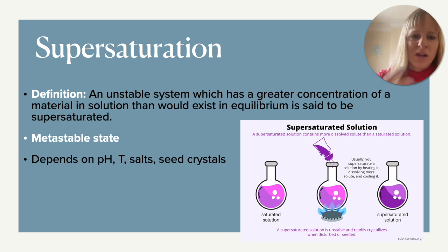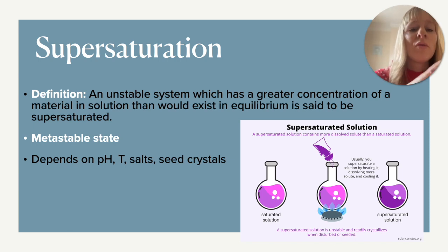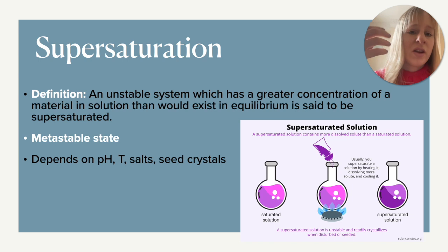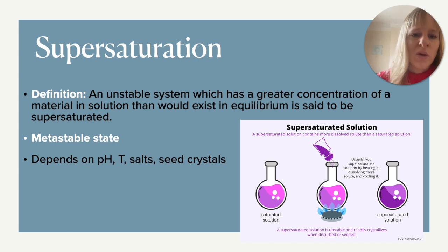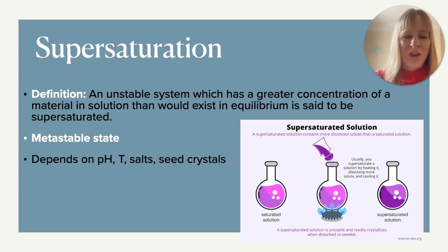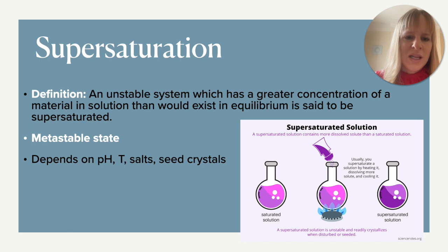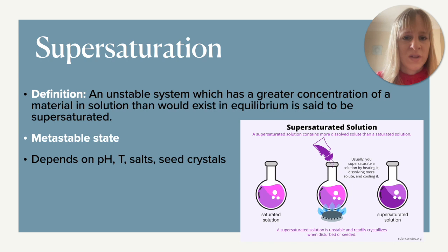To create a supersaturated solution, you can take a saturated solution and heat it up, because generally for most compounds — not all — saturation increases with temperature. Alternatively, you can add some salt to it and then slowly cool it down, and then you get a supersaturated solution which actually contains more of the material than you would have at equilibrium. As mentioned, this is a metastable state, meaning it is inherently unstable and readily crystallizes when disturbed or when a seeding agent is added. This is important when we look at our crystallization process, including primary and secondary nucleation.